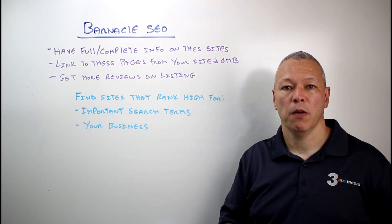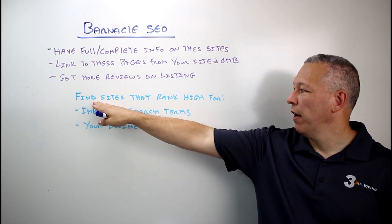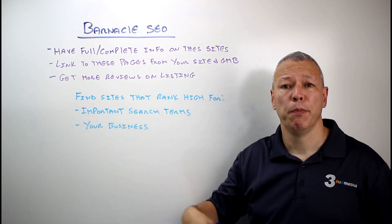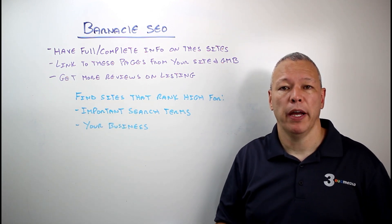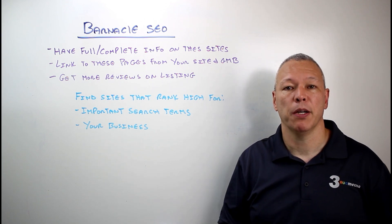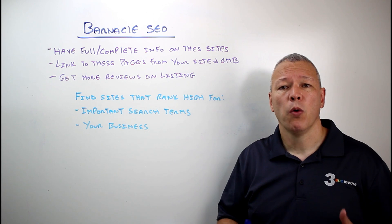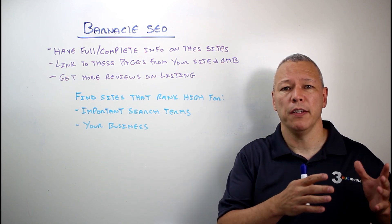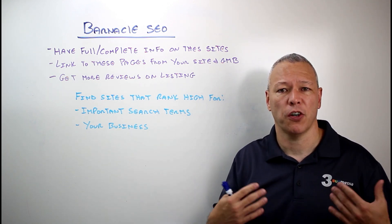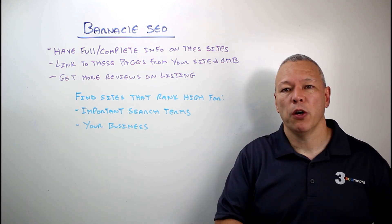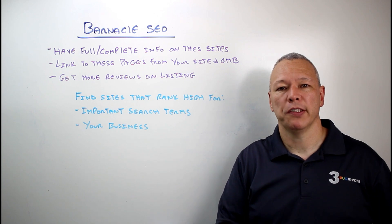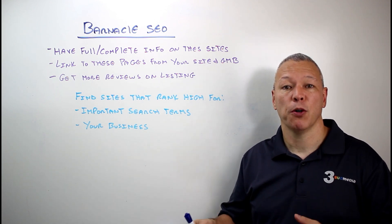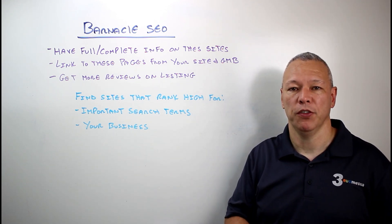What you want to do is find sites that rank for two things: sites that rank for important search terms for your business. So if you're a financial planner and somebody types in 'financial planners near me' or 'financial planners in Charlotte' or 'financial planners in Denver,' and you find the top search results are showing Yelp listings and other larger directory listings, those are the sites you want to go to, find your listing, and start optimizing — because clearly Google is giving preference to that larger website.